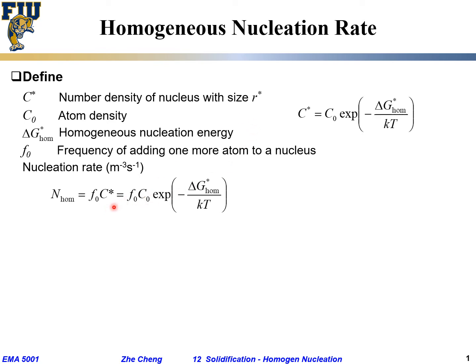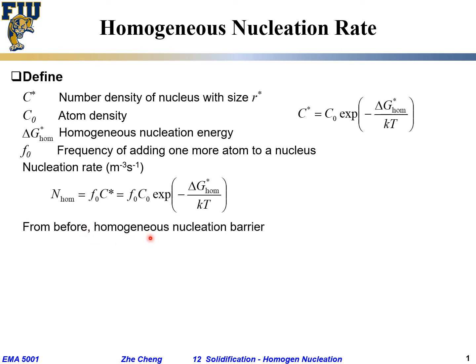We then substitute C* — replacing it with C0 times the exponential term — to obtain the full homogeneous nucleation rate. From earlier derivations, the homogeneous nucleation barrier ΔG*_homo is given by a simple relationship as previously discussed.